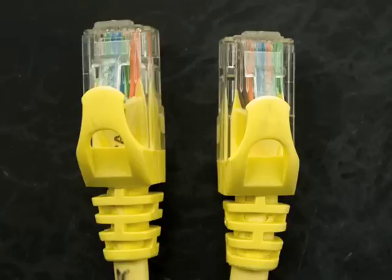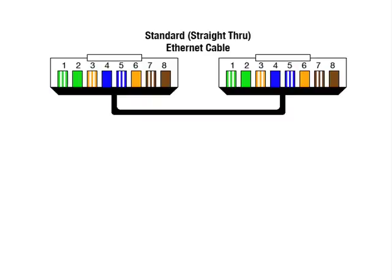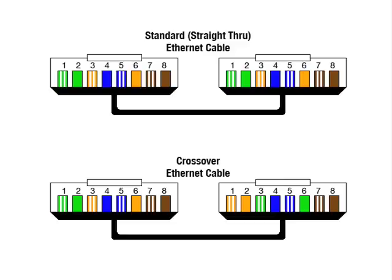Hold the two connectors side by side and orient them so they face exactly the same way. Make sure you can see the little colored wires inside the connector and tell which pins those wires go to. On a standard Ethernet cable, these colored wires will all be connected to the same pins — that's why it's also known as a straight-through Ethernet cable. On a crossover Ethernet cable, some of these colored wires will be connected to different pins, meaning some of the wires will cross over inside the cable.